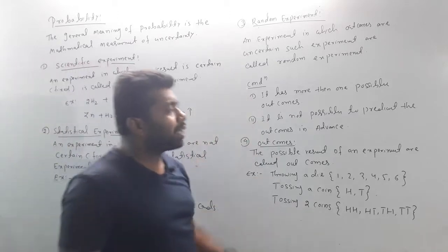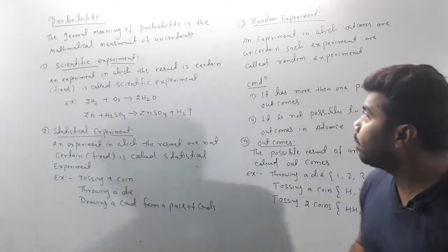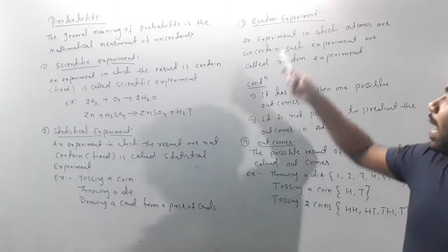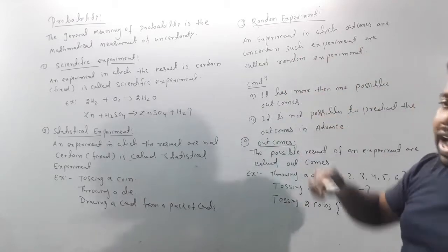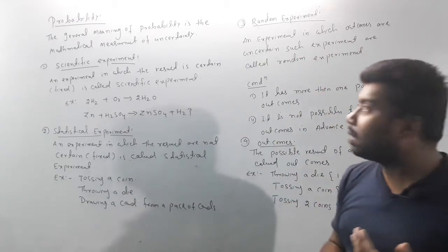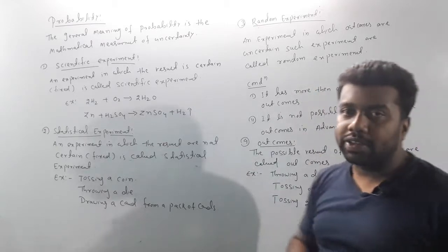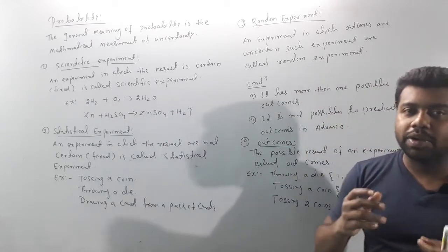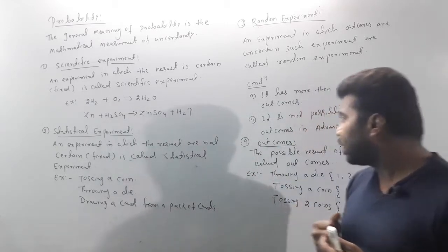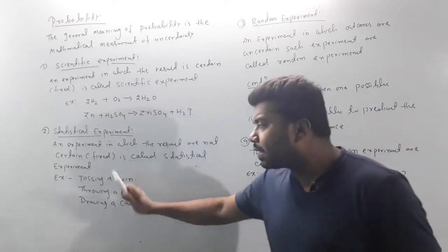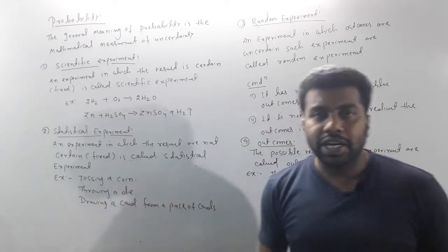Now look at the random experiment. A random experiment is an experiment in which the outcomes are uncertain. As you can see, there is more than one possible outcome in a random experiment.